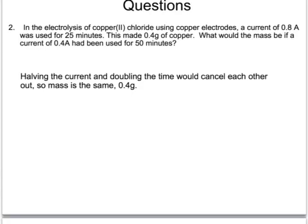Another practice question. In the electrolysis of copper chloride using copper electrodes, a current of 0.8 amps was used for 25 minutes. This made 0.4 grams of copper. What would the mass be if a current of 0.4 amps was used for 50 minutes? Between the first and the second run, the current has halved but the time has doubled. Halving the current and doubling the time cancel each other out, so the mass would be exactly the same: 0.4 grams.